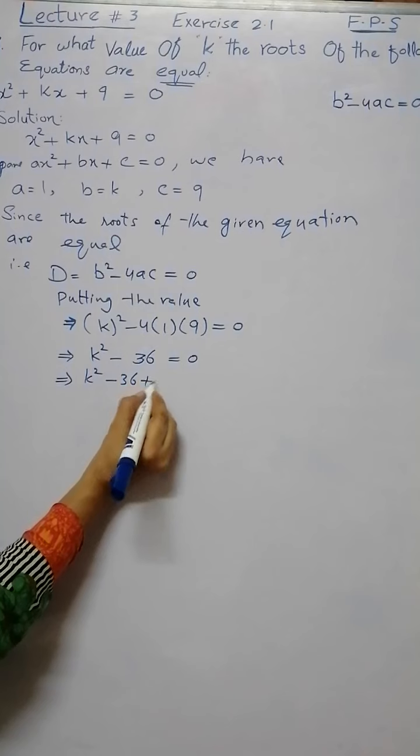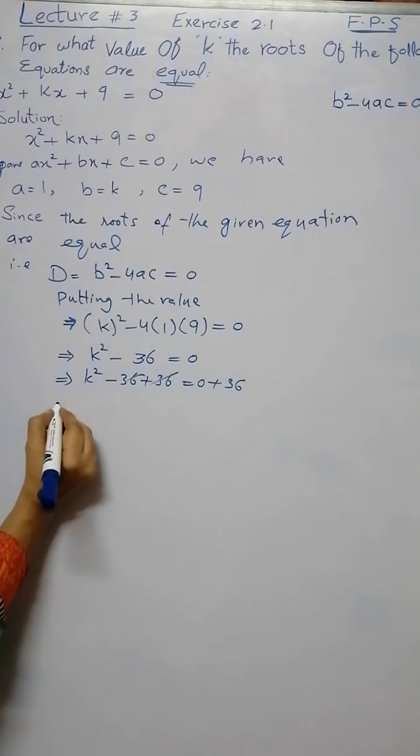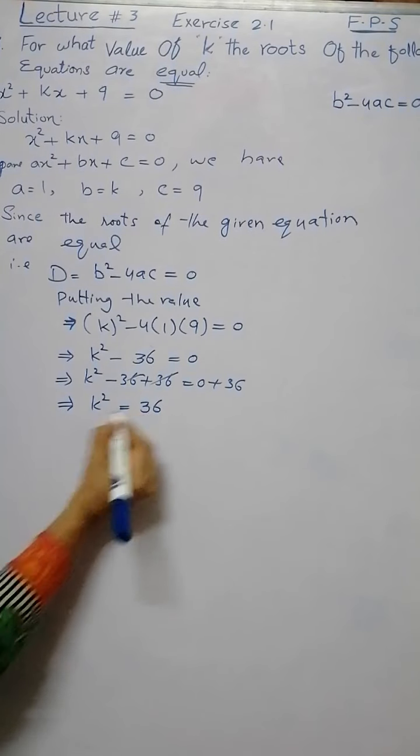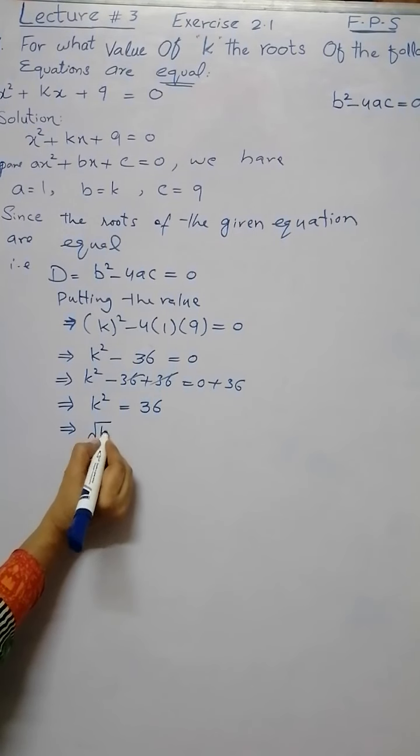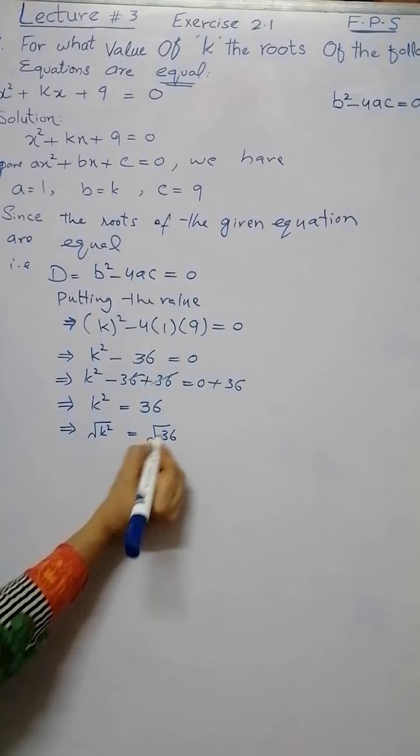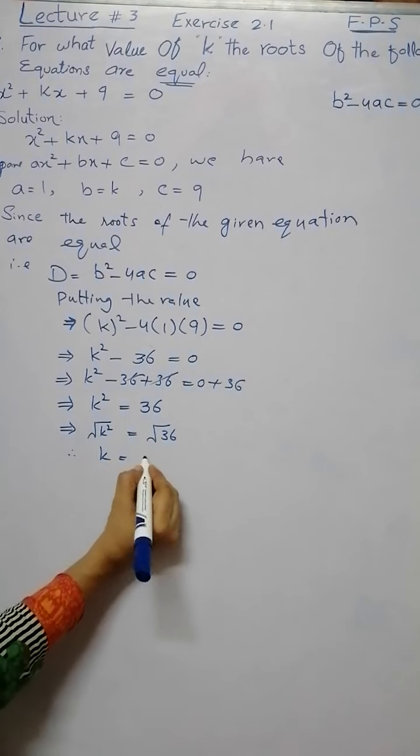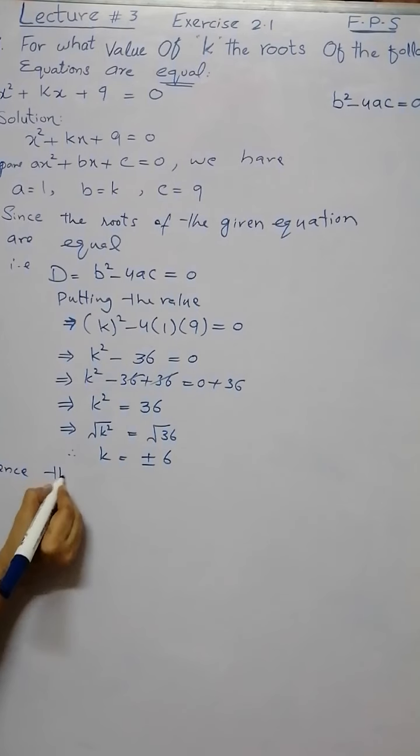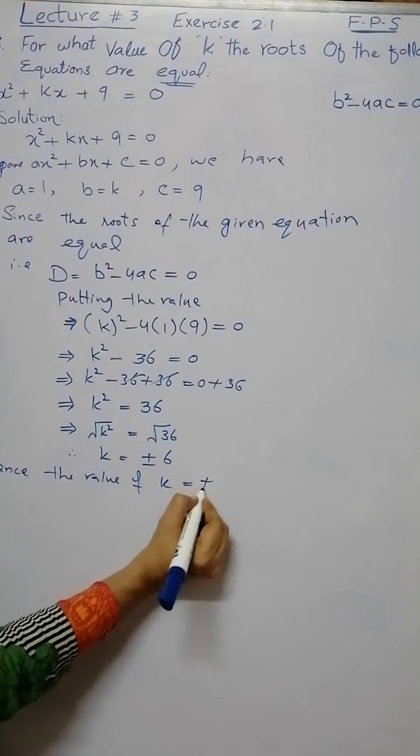Adding 36 on both sides we get k² equals 36. By taking square root on both sides, we have the value of k which is plus minus 6.